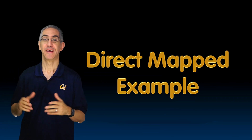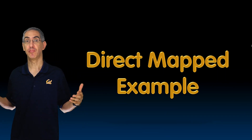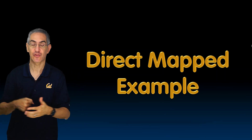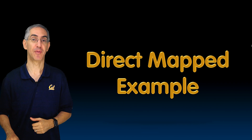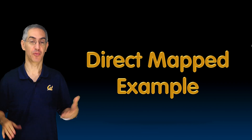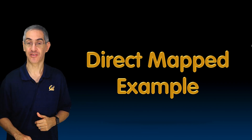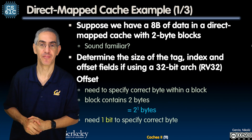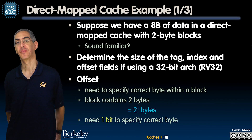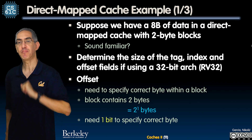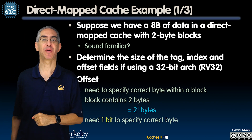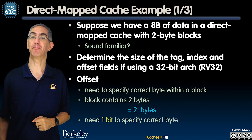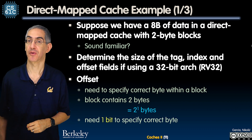Welcome back. Now let's work on an actual problem where we learn about direct map caches with some actual numbers. I've got eight bytes of data in a direct map cache with two byte blocks.